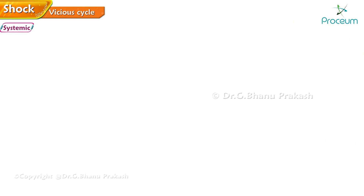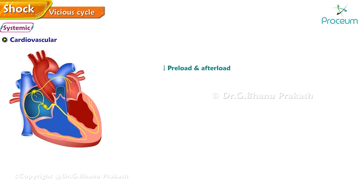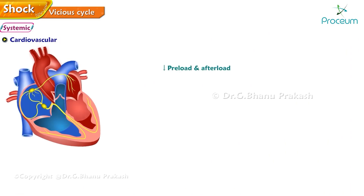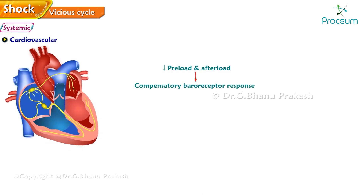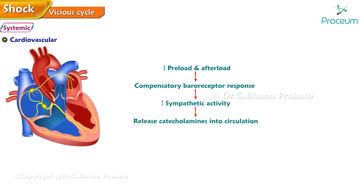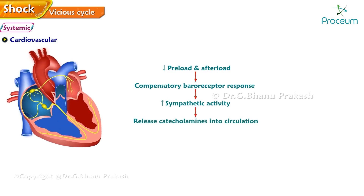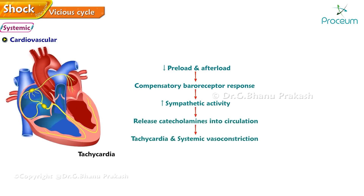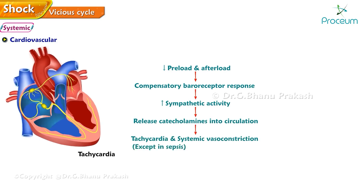Systemic stage: The microvascular dysfunction triggers a systemic response involving multiple organ systems. Cardiovascular: As preload and afterload decrease, there is a compensatory baroreceptor response resulting in increased sympathetic activity and release of catecholamines into the circulation, producing tachycardia and systemic vasoconstriction — except in sepsis.